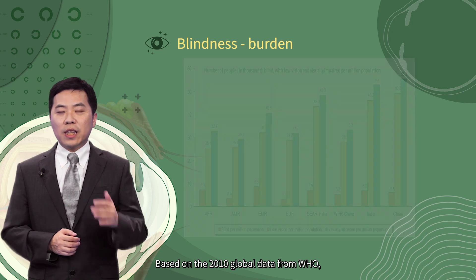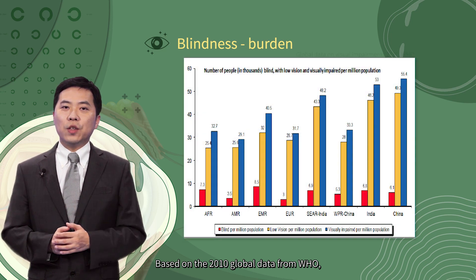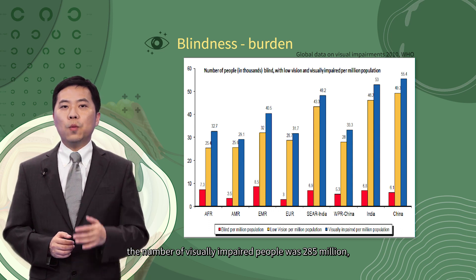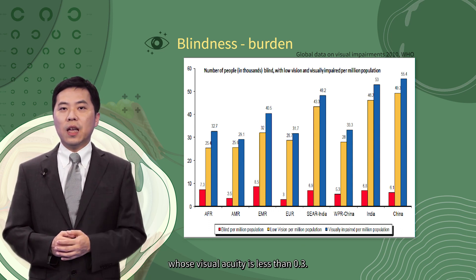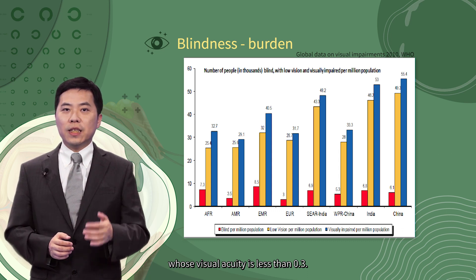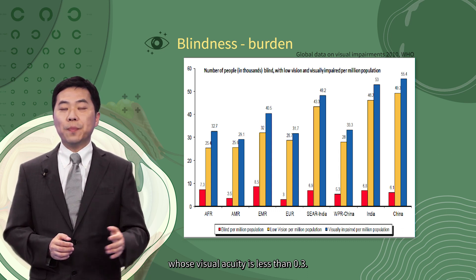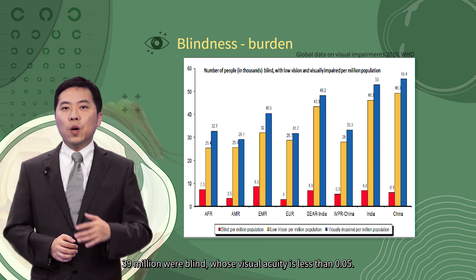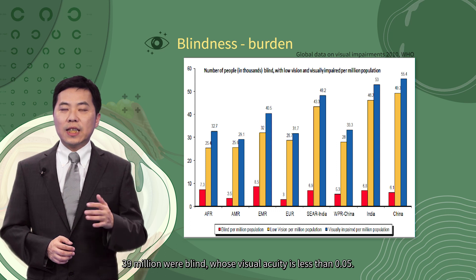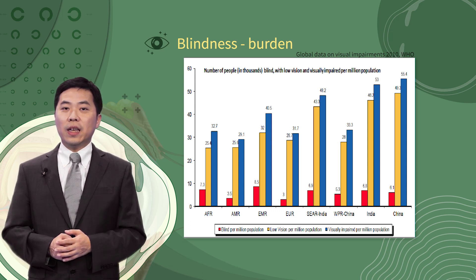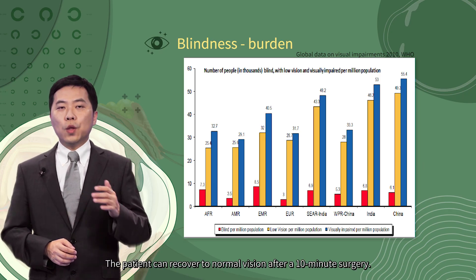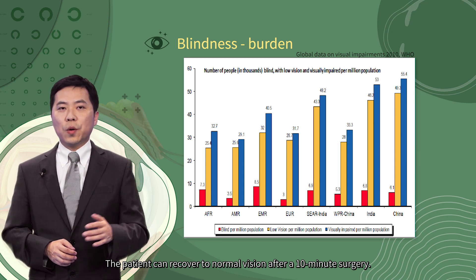Based on 2010 global data from the WHO, the number of visually impaired people was 285 million, with visual acuity less than 0.3. But luckily, half of all blindness is caused by cataract, and patients can recover to normal vision after a 10-minute surgery.